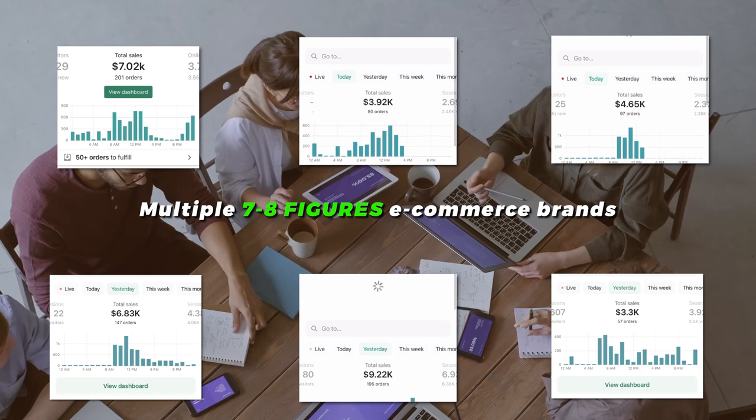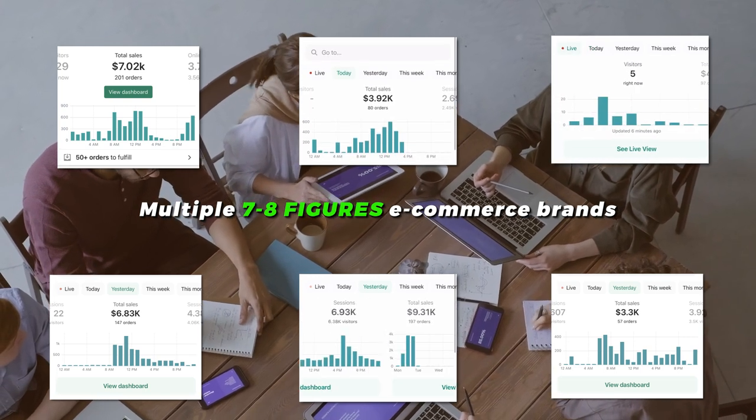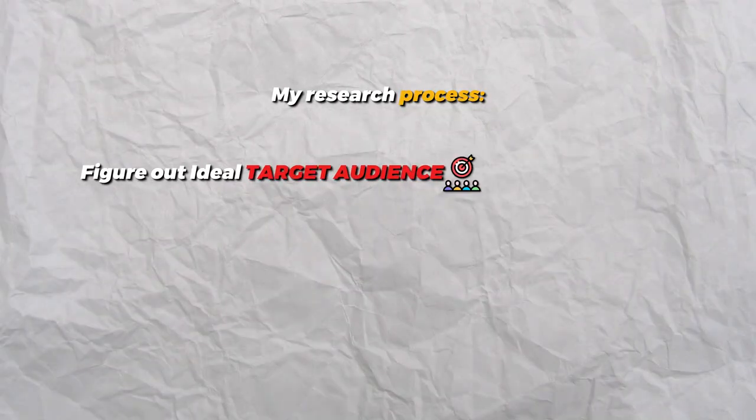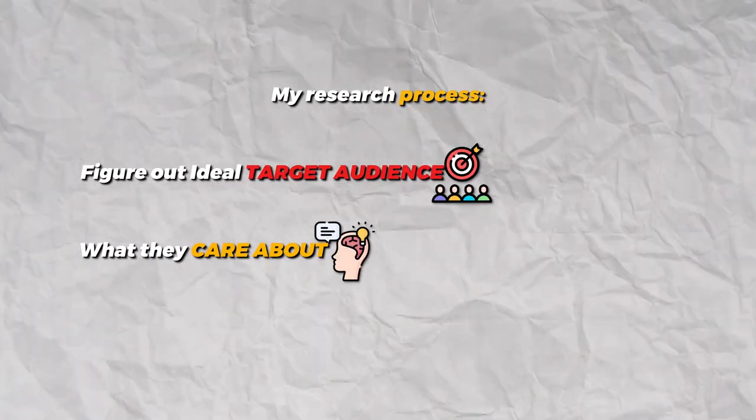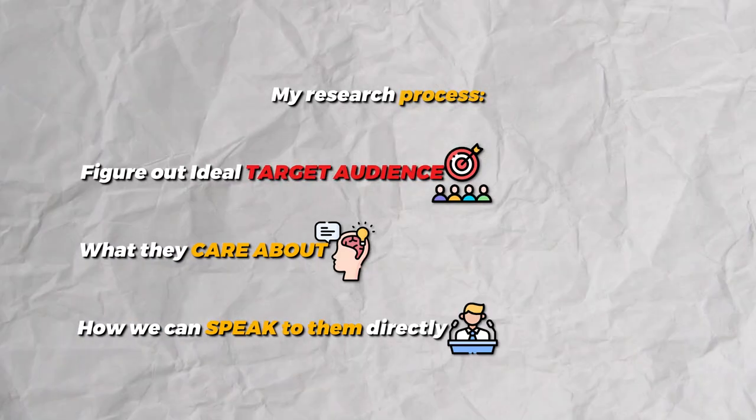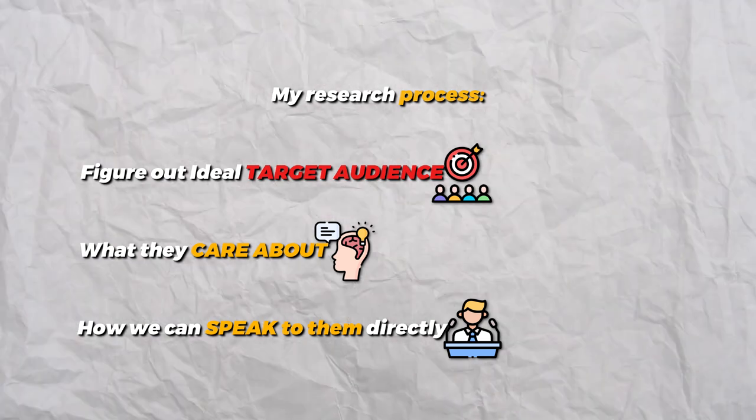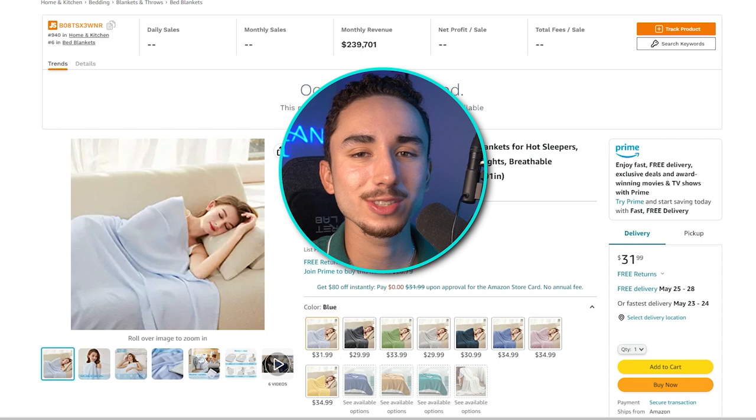As an ad agency owner who is currently running and creating ads for multiple seven- and eight-figure e-commerce brands, this is my exact research process for how I figure out who my ideal target audience is, what they care about, and how we can speak to them directly to come up with winning ads every single time. So if you've never had a successful ad campaign, no matter what you try, your cost per clicks are way too high — this is the video for you.